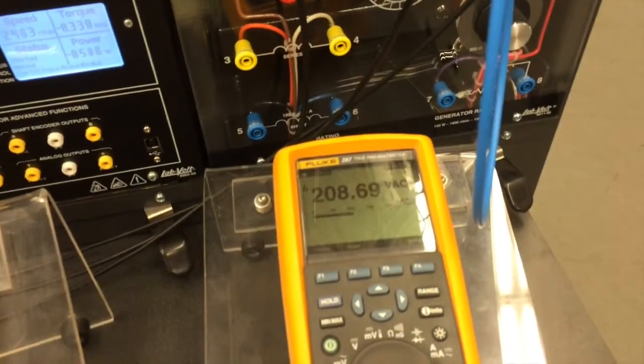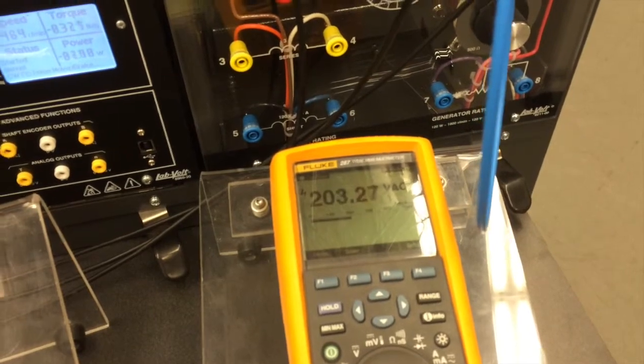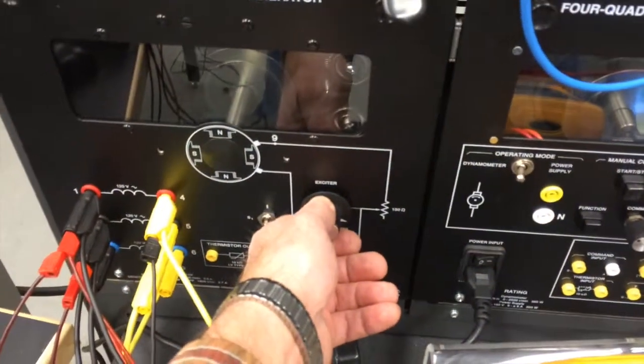Now something else we have on here is we also have the Variac on the main supply. That Variac can also be adjusted because that's adjusting the resistance in our field.